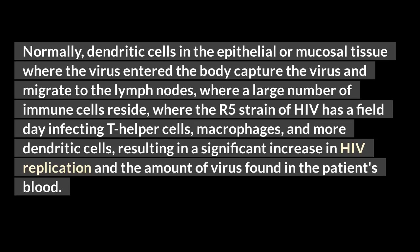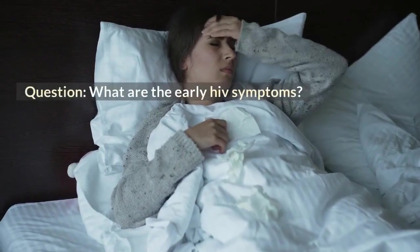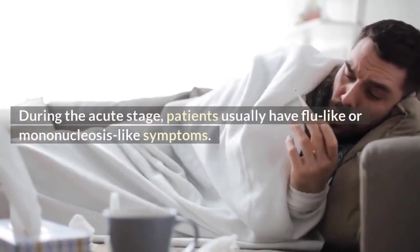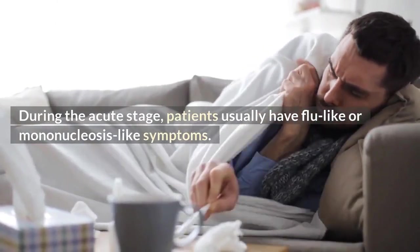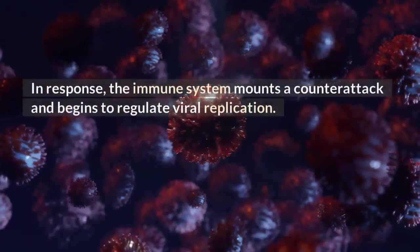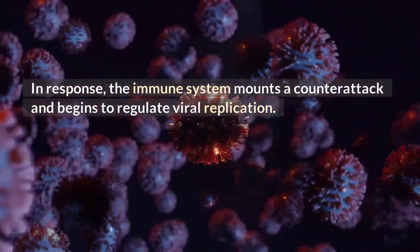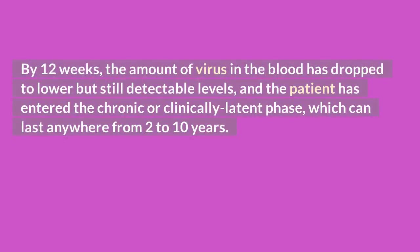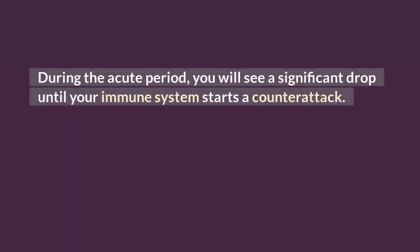What are the early HIV symptoms? During the acute stage, patients usually have flu-like or mononucleosis-like symptoms. In response, the immune system mounts a counterattack and begins to regulate viral replication. By 12 weeks, the amount of virus in the blood has dropped to lower but still detectable levels, and the patient has entered the chronic or clinically latent phase, which can last anywhere from 2 to 10 years.